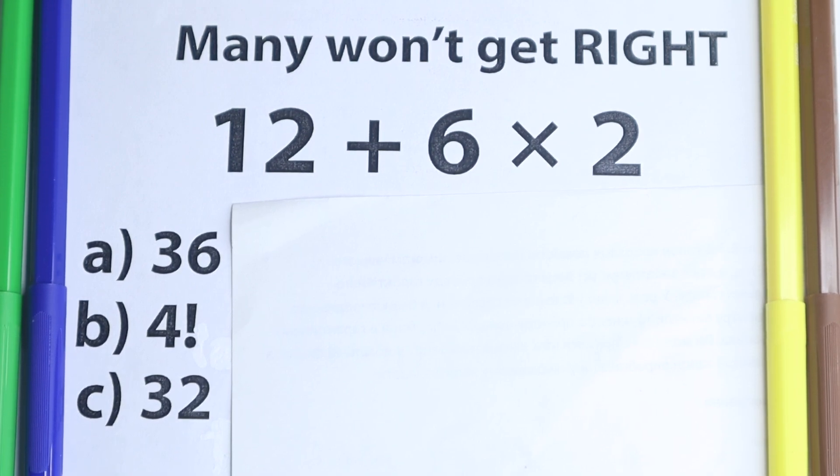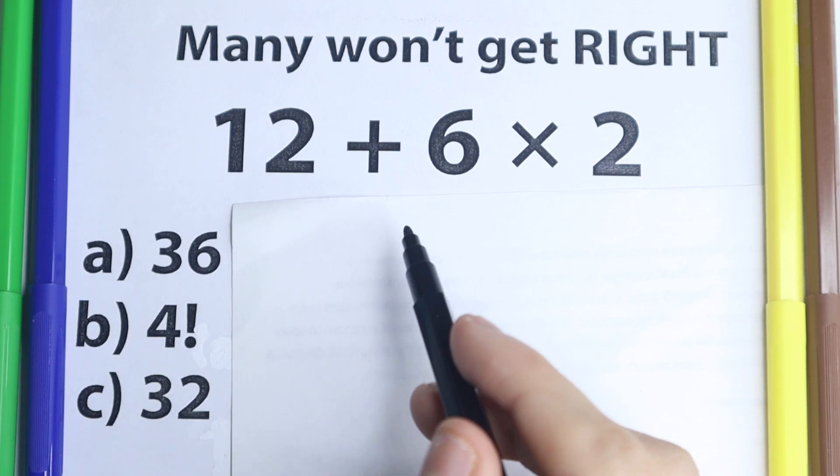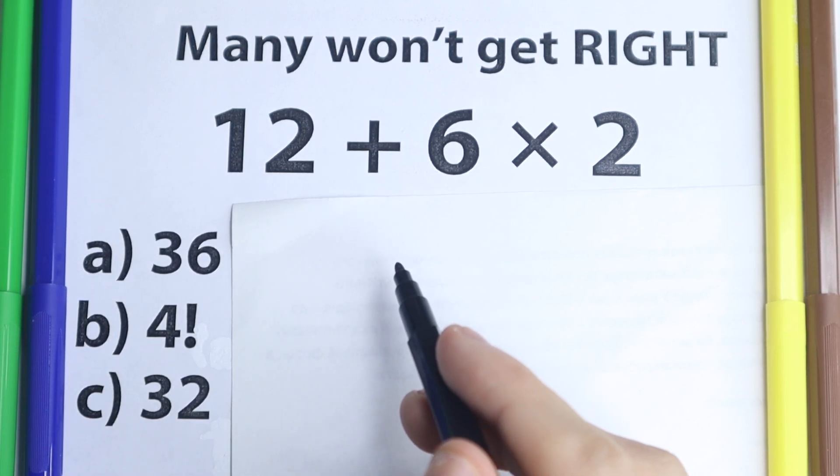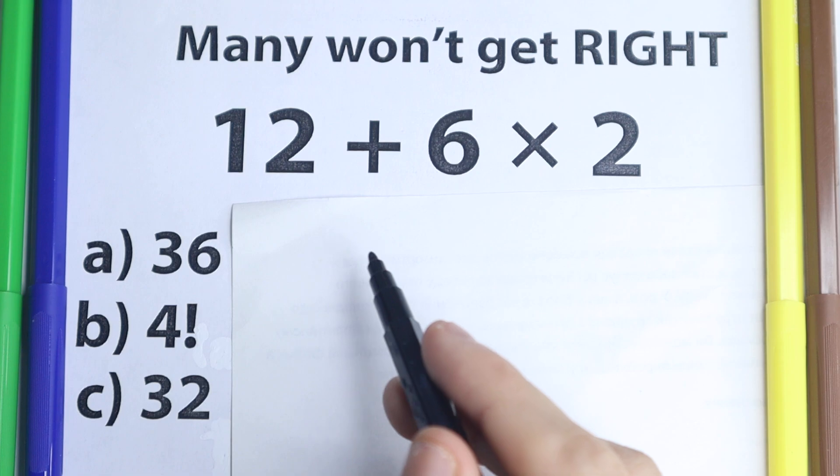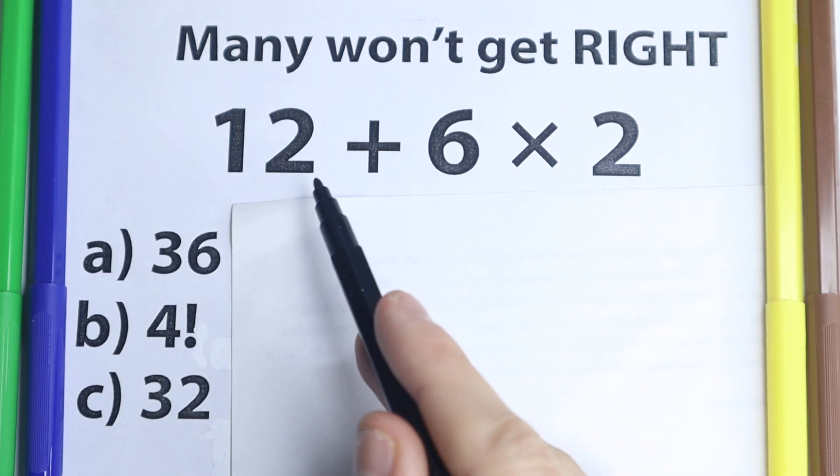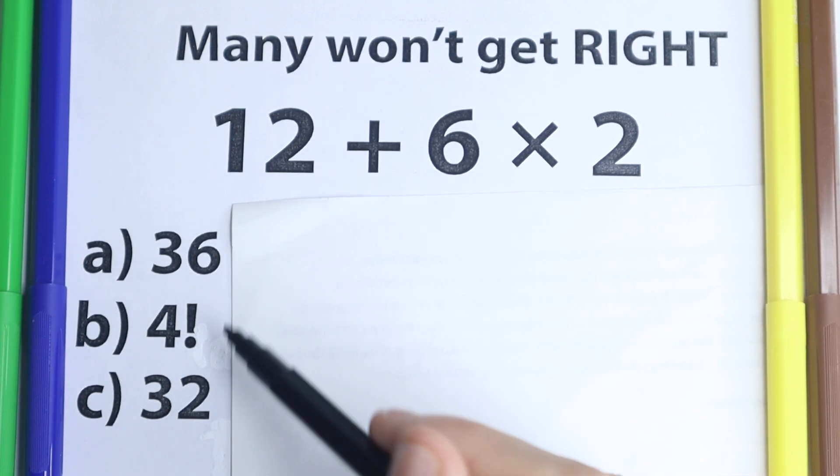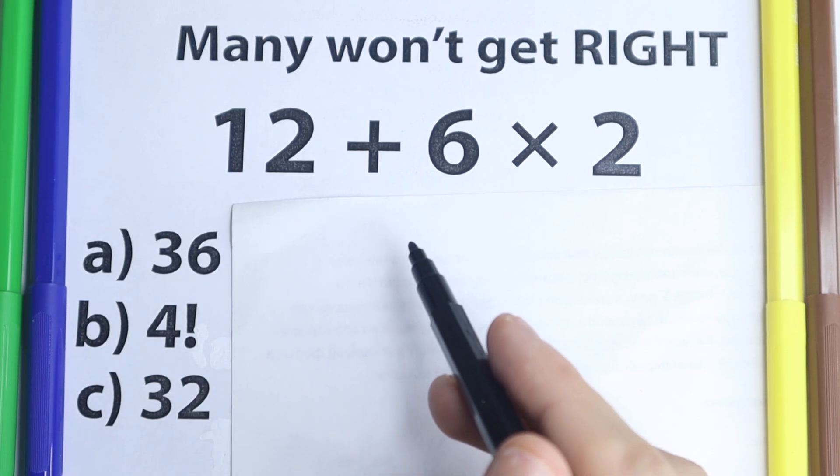Hello everyone! Happy to see you here. In this video we are going to do a very simple math problem, and you are going to be surprised that many of you are actually going to get this wrong. So I don't want you to use your calculator right here, because as you can see it's a very simple problem: 12 plus 6 times 2, and we have a lot of options right here. So what is the correct answer?